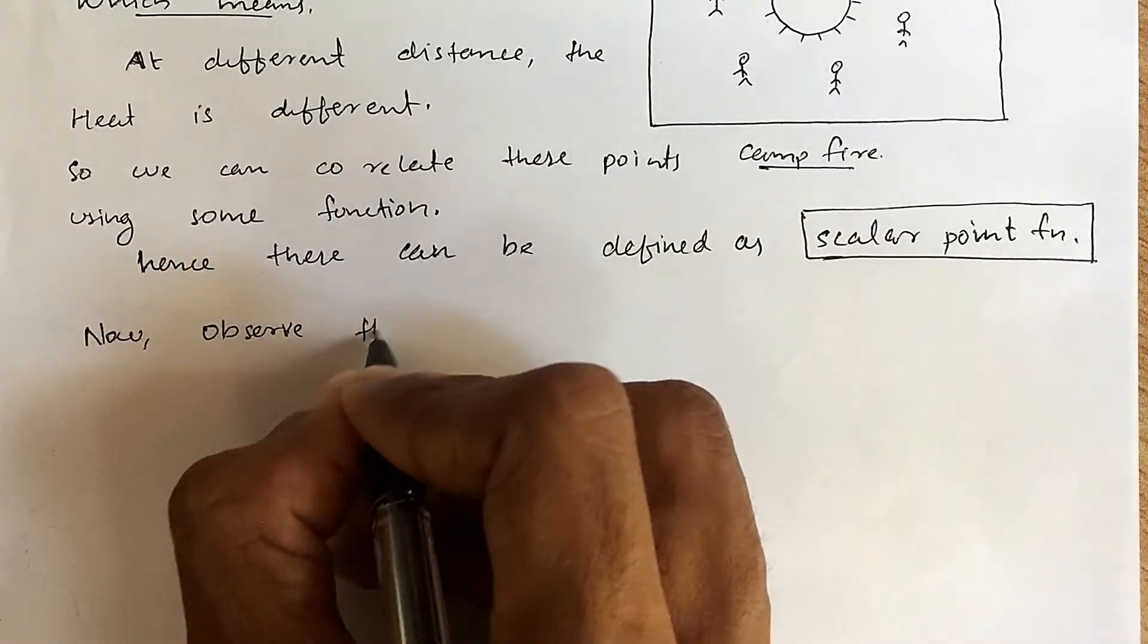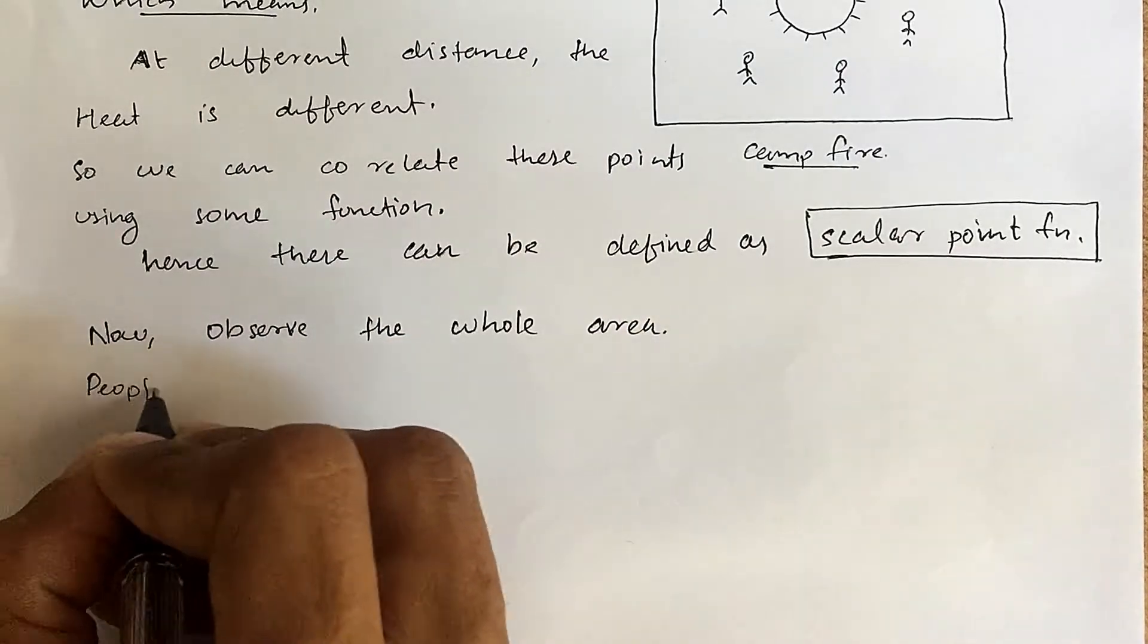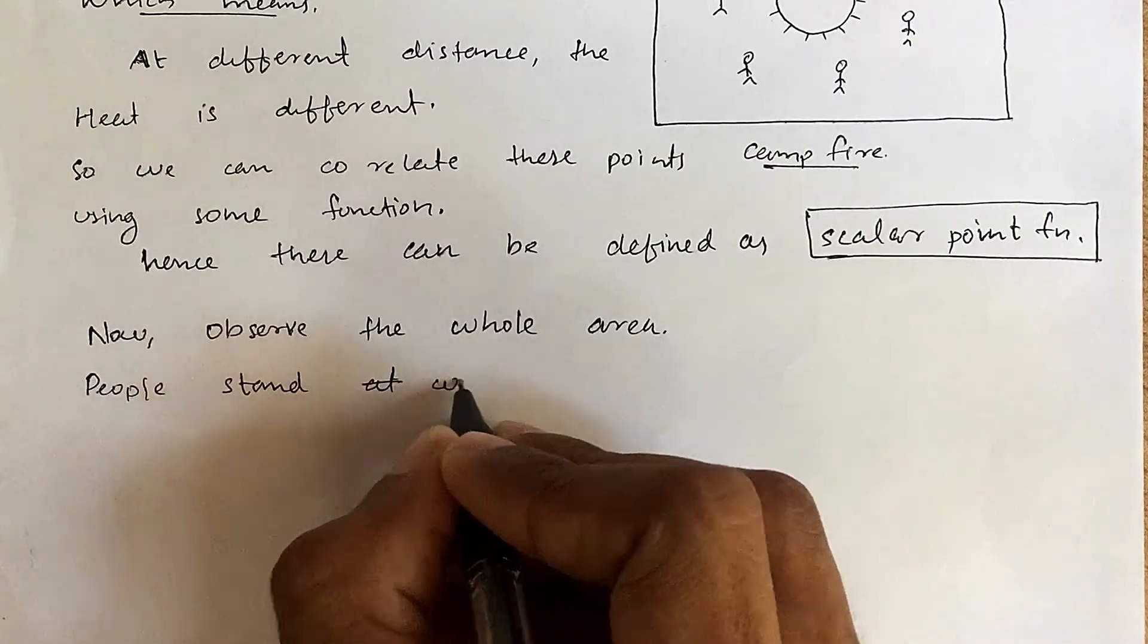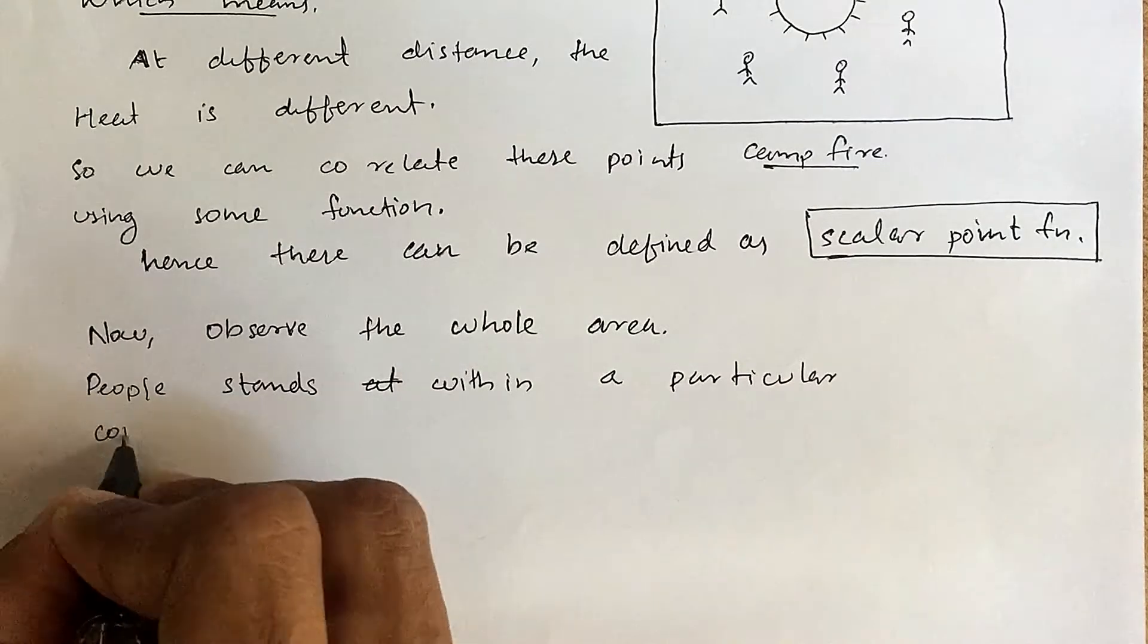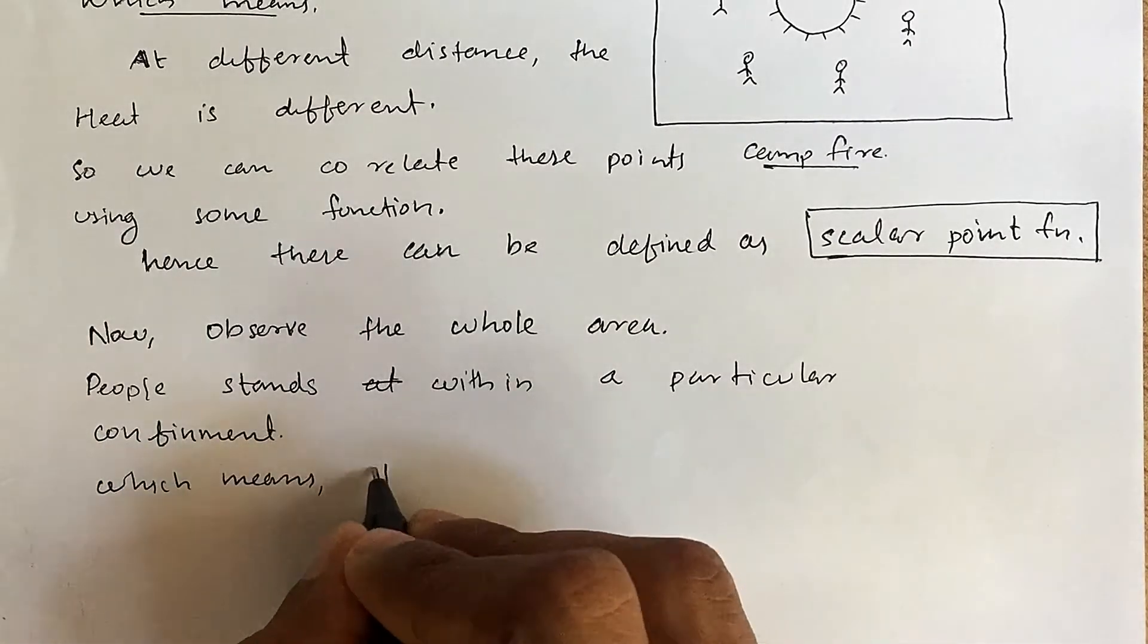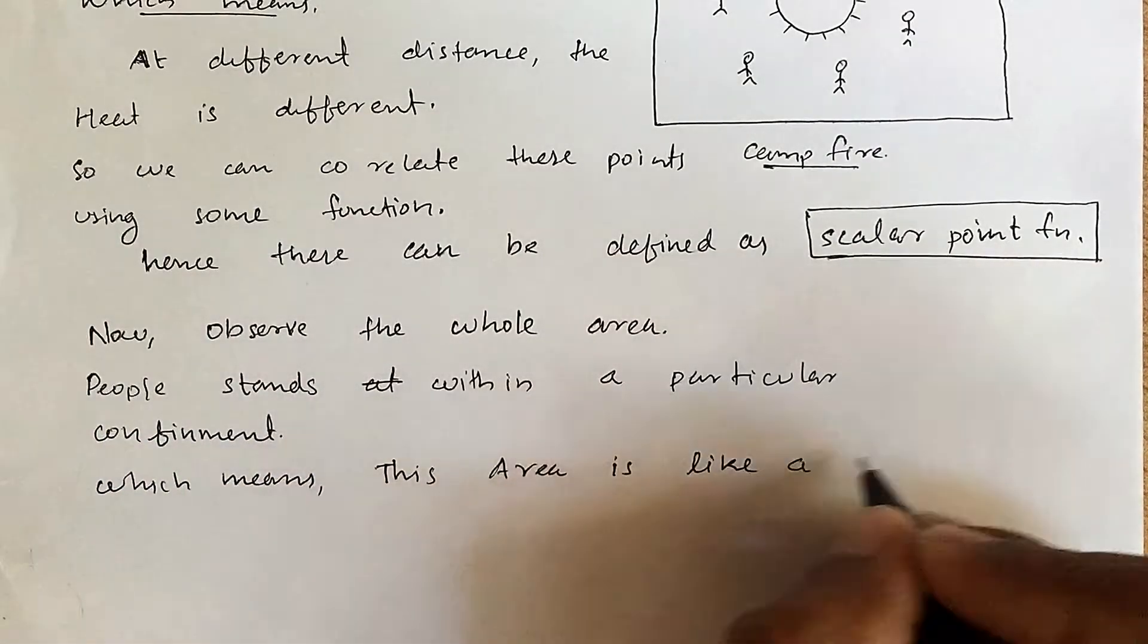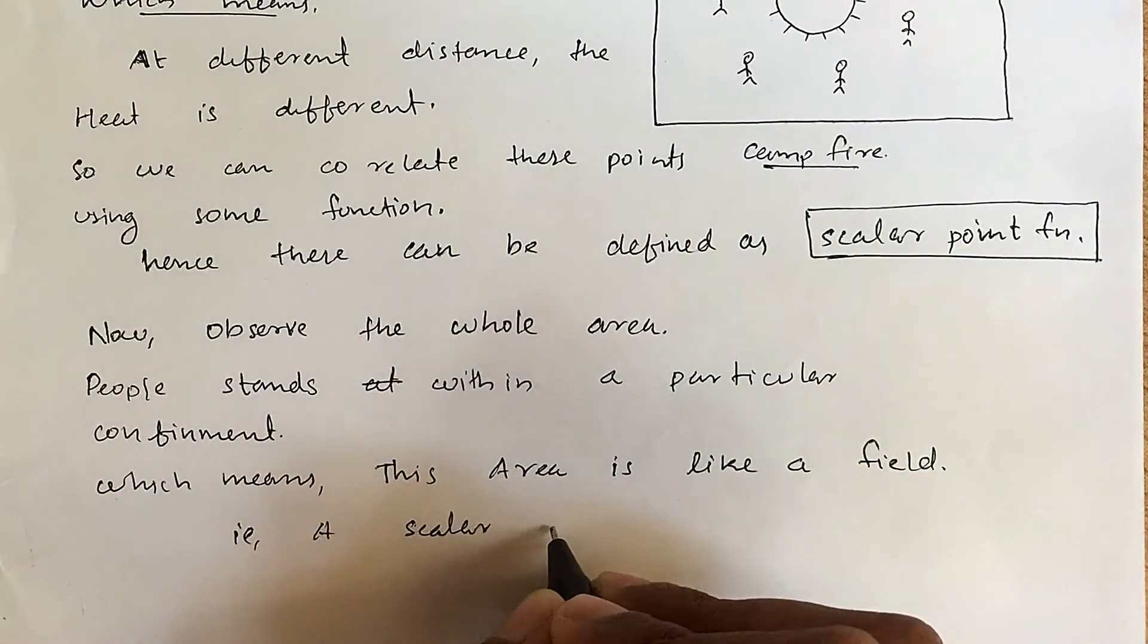Now observe the whole area. People stand within a confined area, which means the heat from the fire has a field. So we can call this area as scalar field, since there is no dependency on direction.